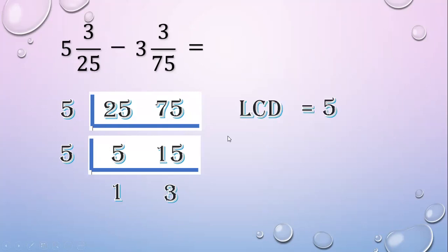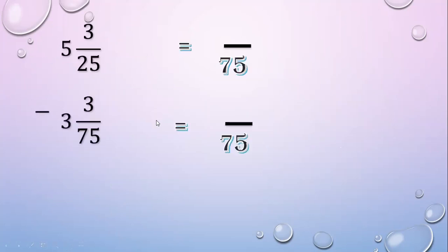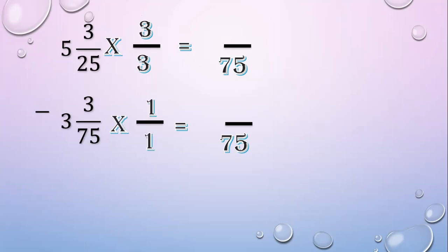LCD equals 5 times 5 times 3. 5 times 5 equals 25; 25 times 3 equals 75. Then change the denominators to 75. For 25 to make it 75, multiply by 3 — so multiply 3 over 3. For 75 to make it 75, multiply by 1 — so multiply 1 over 1. Then multiply the numerators: 3 times 3 equals 9; 3 times 1 equals 3. Copy the whole numbers.